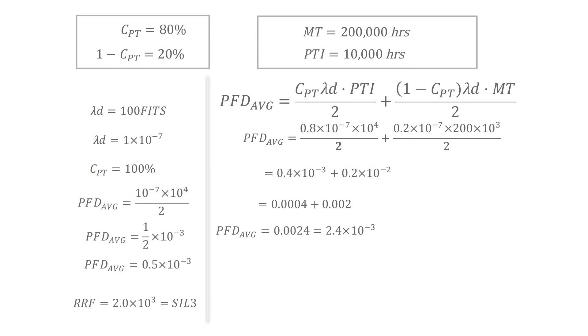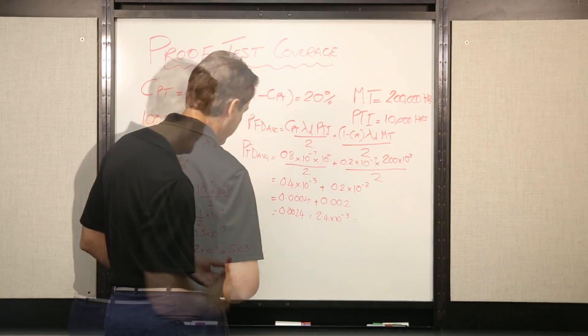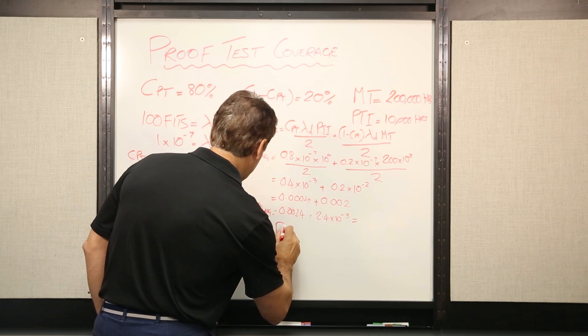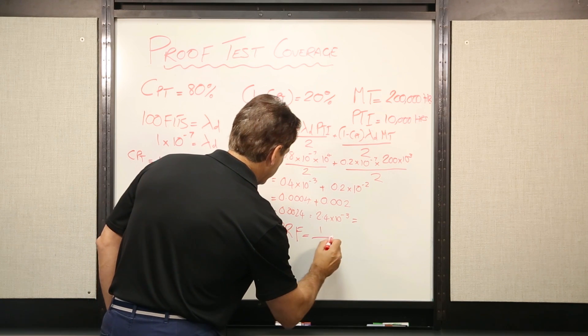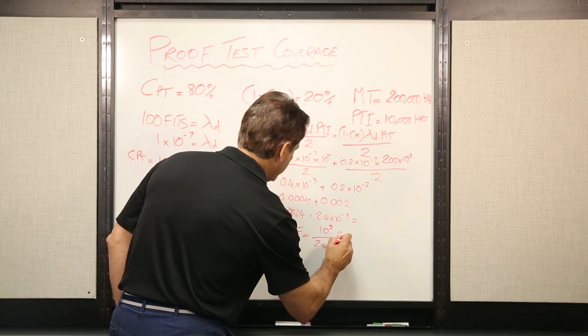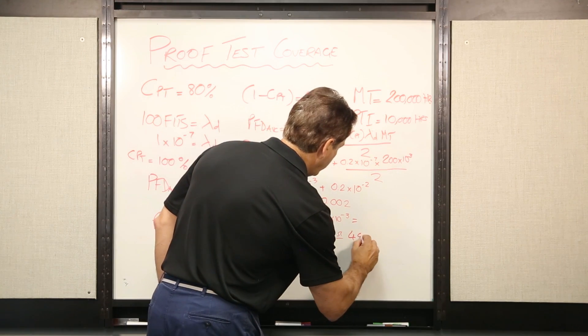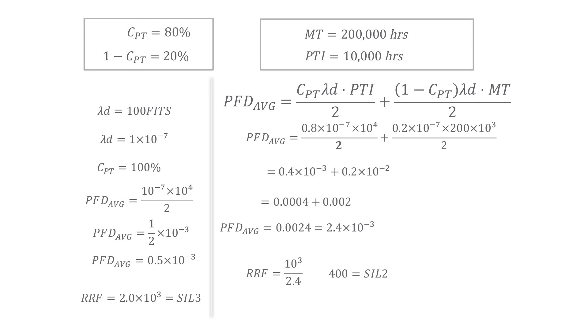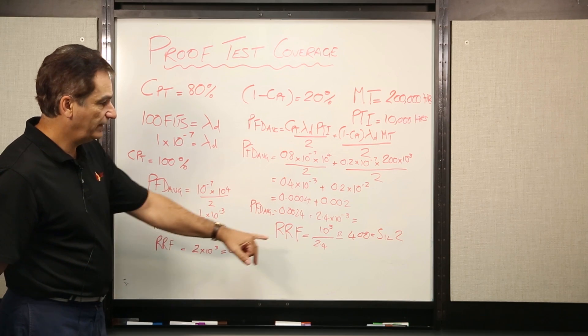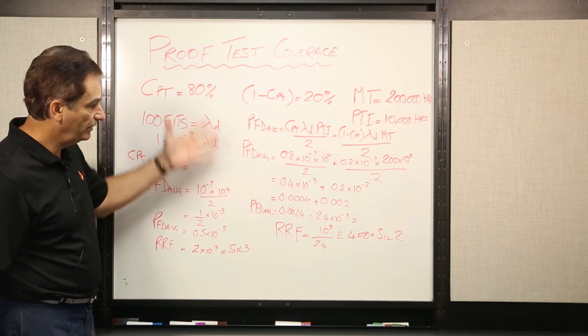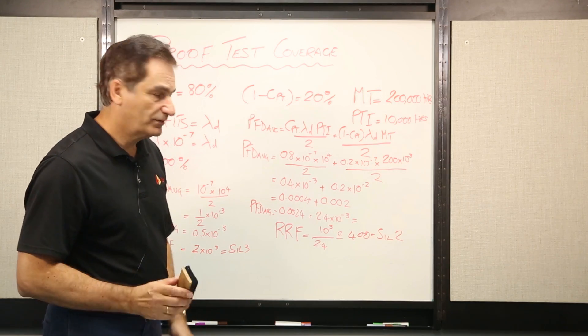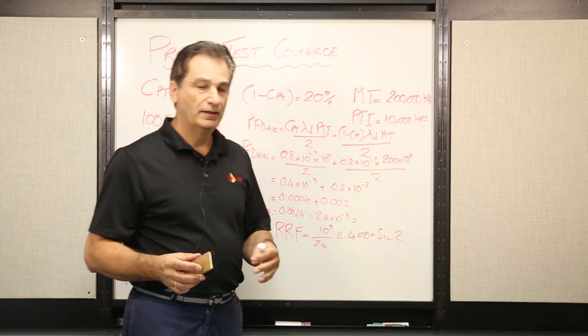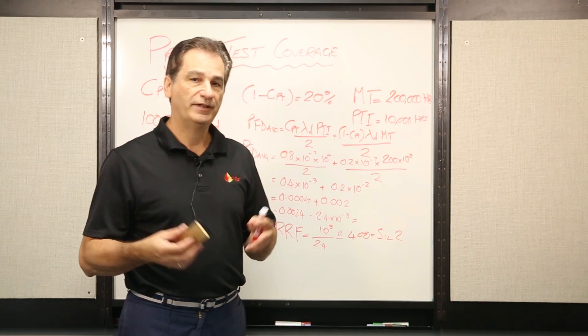With 100%, we could achieve SIL 3. But over here, if we work this out, so the PFD average is that, and therefore, our risk reduction factor will be the inverse, which is 1 over 2.4 times 10 to the 3, which is very approximately about 400, which is SIL 2. So you can see we move from a SIL 3 down to a mid-range SIL 2, simply by not having 100% proof test coverage. So that's why it's very important to understand that relationship. So clearly, when we're designing, we want to try and create a proof test to find as many of those dangerous faults.